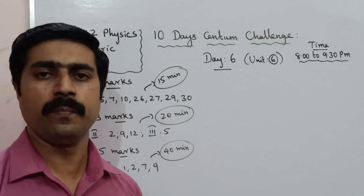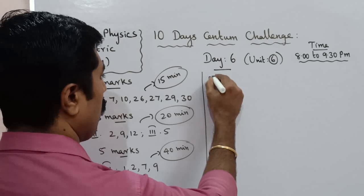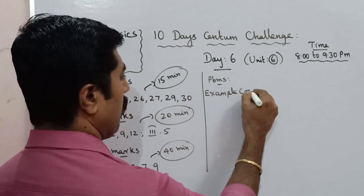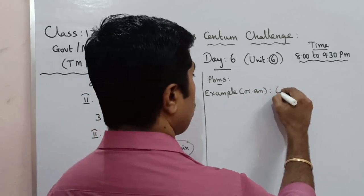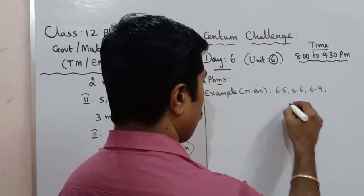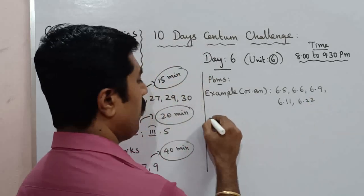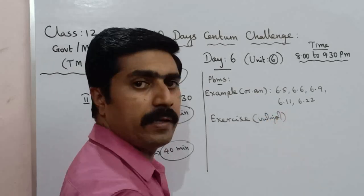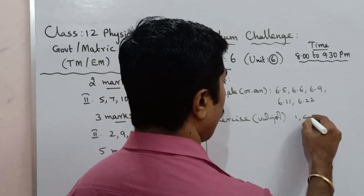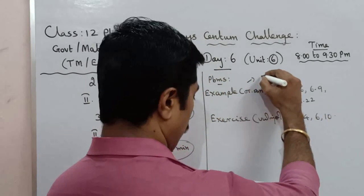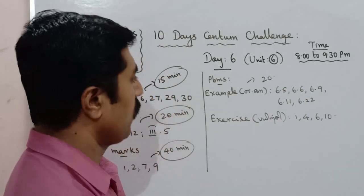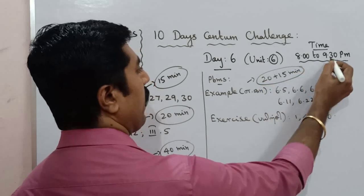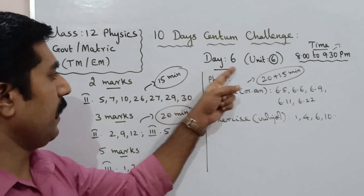After the 40 minutes is complete, next are problems and examples. Examples 1, 4, 6, and 10. For this we will allocate 20 minutes. If you finish early, you can do additional work and increase your preparation time. So here is the complete Day 6 schedule.